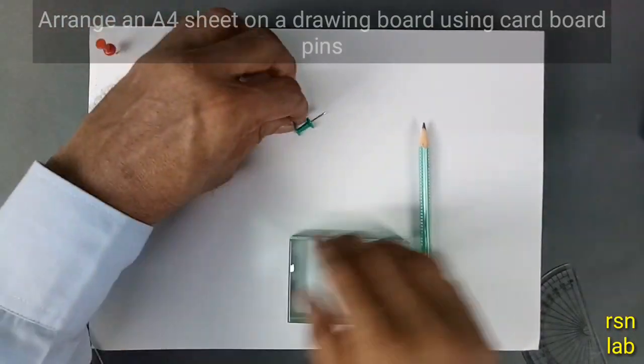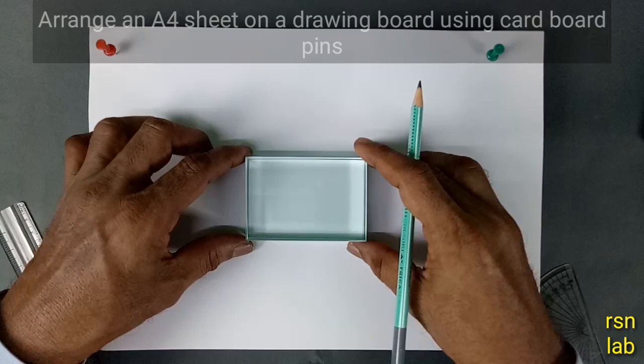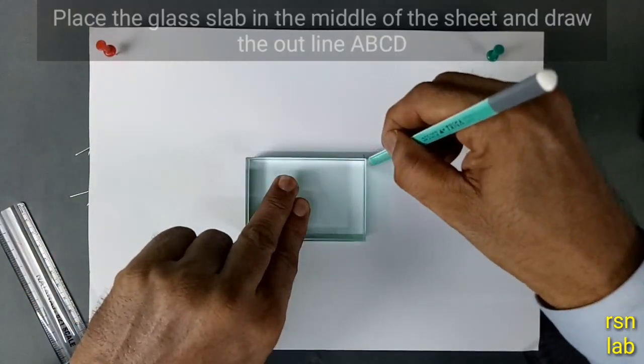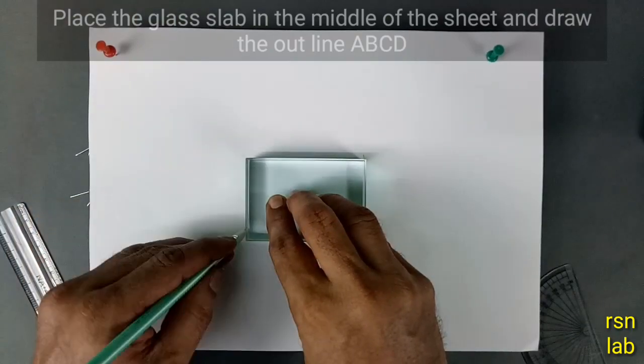Arrange an A4 sheet or drawing board using cardboard pins. Place the glass slab in the middle of the sheet and draw the outline ABCD.